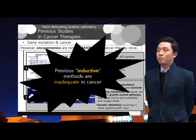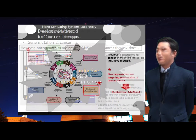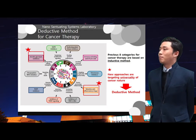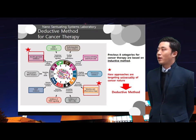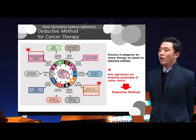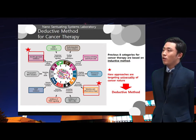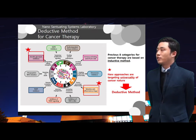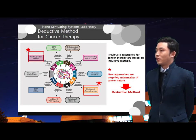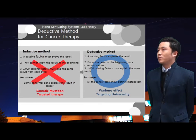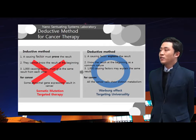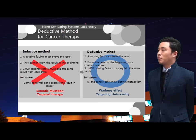More general and universal therapeutic approaches are required for cancer. This figure illustrates some of the many approaches employed in developing therapeutics targeted to the known and emerging hallmarks of cancer. In the earlier version, only 8 approaches were introduced. However, 2 additional approaches, shown in the red box, have been added. These approaches target the universality of cancer nature and are all based on the deductive method. In the inductive method, a causing factor must prove the result. In contrast, in the deductive method, a causing factor explains the result.